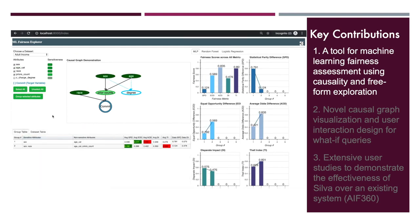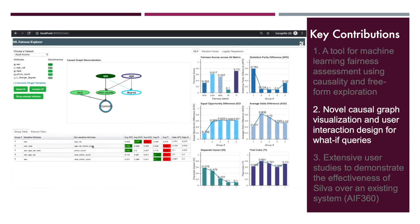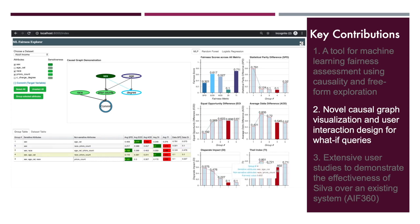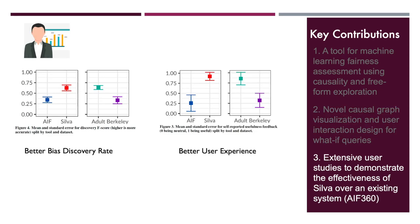Users are free to explore sources of bias using their existing knowledge. Users can ask hypothetical what-if questions by examining causal paths and comparing results for models trained on different attribute groups. Our user studies demonstrate that Silva is more effective in fairness assessment for users of all knowledge levels.